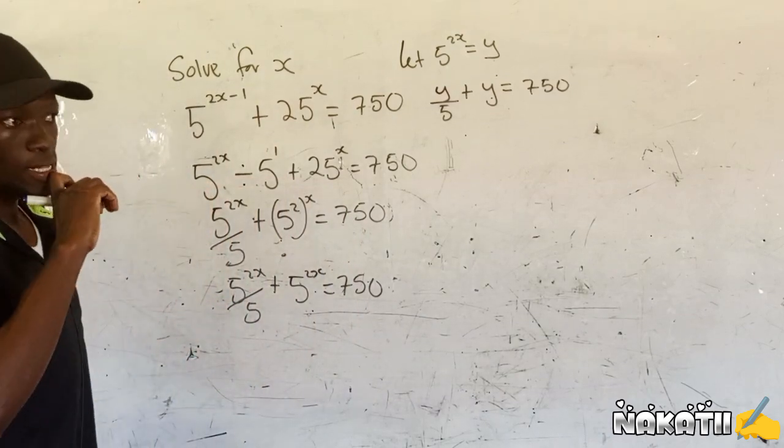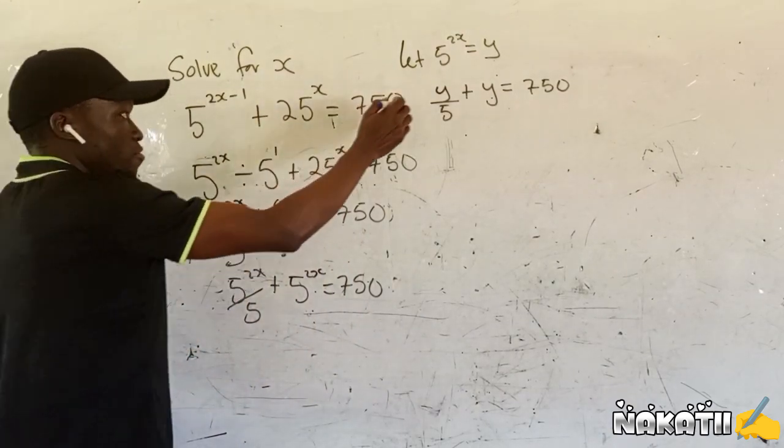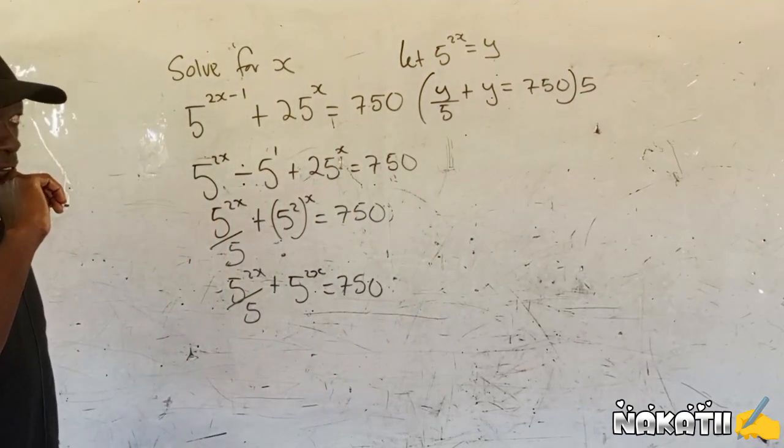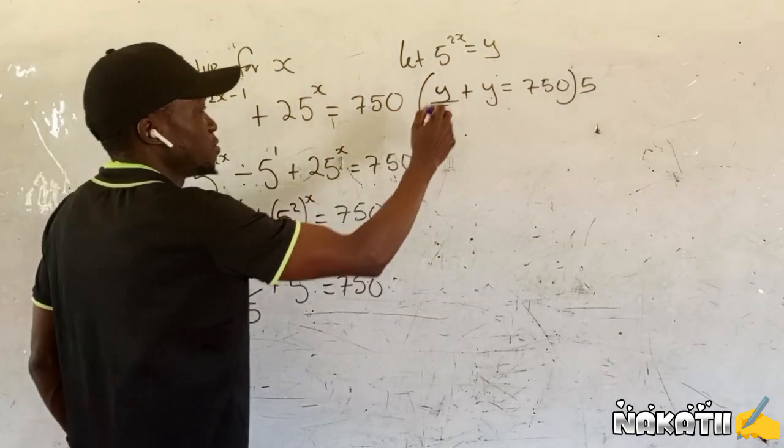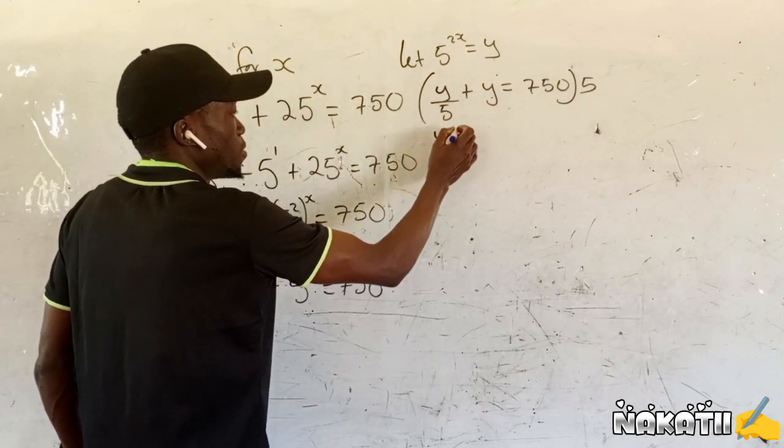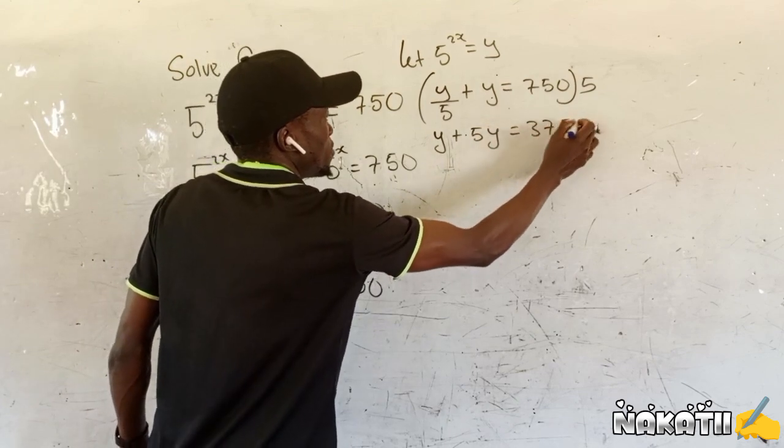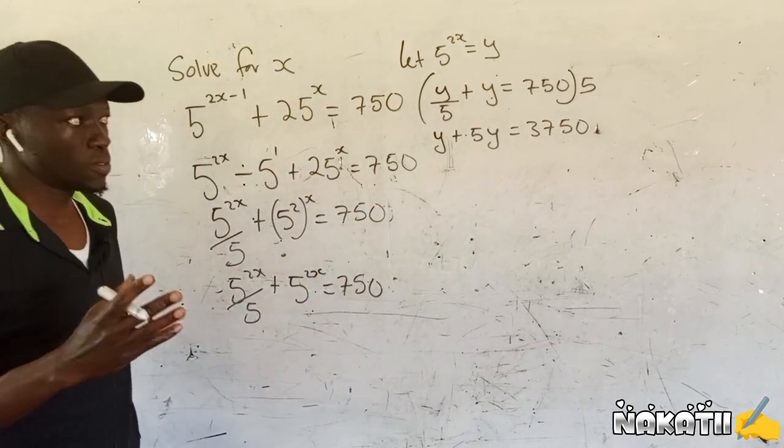Then we can multiply everything by 5. You can multiply everything by 5 so that we have y plus 5y equals 3750.